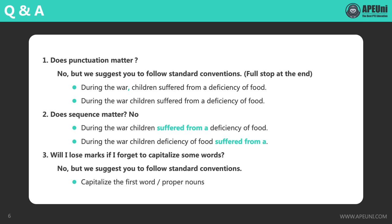The second question is, does sequence matter? Again, the answer is no. In the score guide, there is no mentioning of the sequence, which is different from Repeat Sentence. In Repeat Sentence, we have to repeat the sentence in the correct order. But in Write from Dictation, we will still be awarded marks even if the words are in the wrong order. For example, in our second sentence, the words 'suffered from a' have been wrongly placed at the end, but we can still receive full marks.